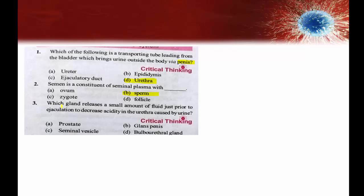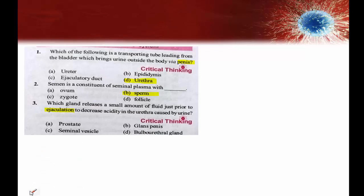Next question: which gland releases a small amount of fluid just prior to ejaculation to decrease the acidity in the urethra caused by urine? Ejaculation is the release of semen from the male reproductive system.